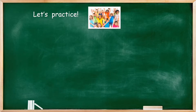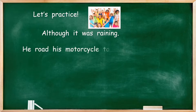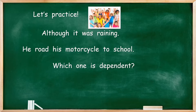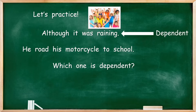Let's practice! Although it was raining, he rode his motorcycle to school. These are two separate sentences. Which one is dependent? Which one does not make sense by itself? Let's read them again. Although it was raining. If I came up to you and said, 'Hello, although it was raining,' would you understand what I mean? If I walk up to you and say, 'Hello, he rode his motorcycle to school,' would you understand what I mean? If you said 'Although it was raining' is the dependent clause, you're correct. That makes 'He rode his motorcycle to school' the independent clause.